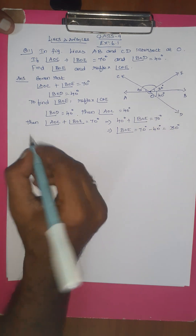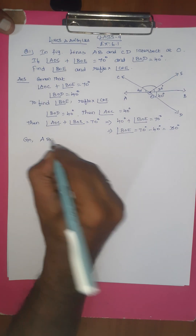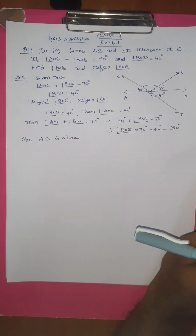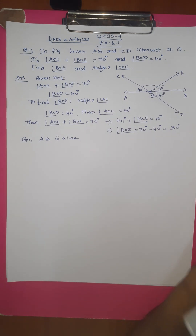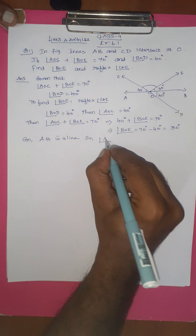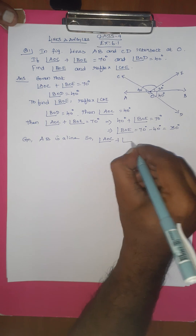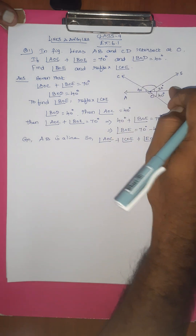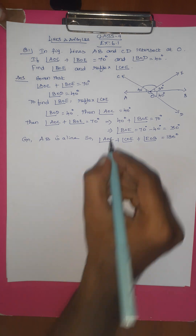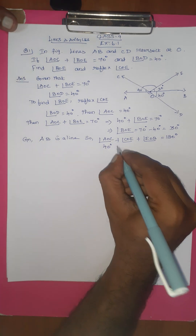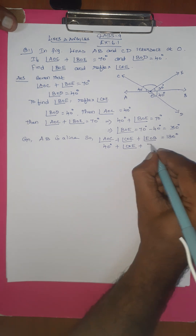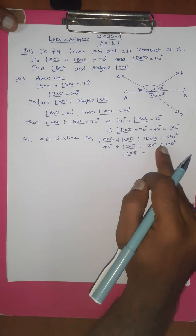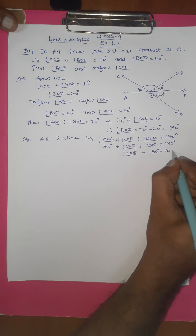AB is a straight line, so this line is 180 degrees. Angle AOC plus angle COE plus angle BOE equals 180 degrees. Angle AOC plus angle BOE equals 70 degrees, so angle COE equals 180 minus 70 equals 110 degrees.